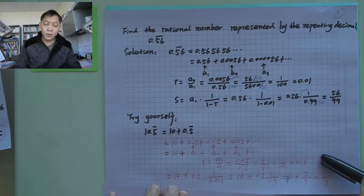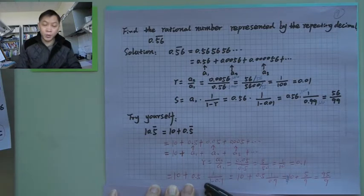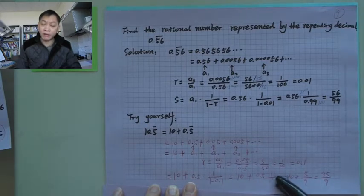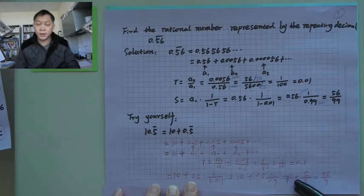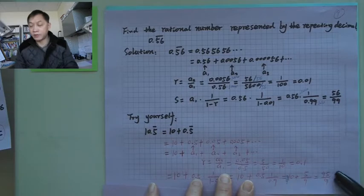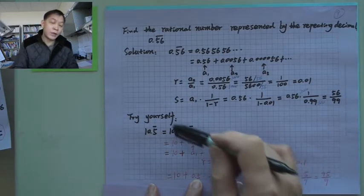So you put into the formula: 10 plus 0.5 times 1 over 1 minus 0.1, and then 10 plus 0.5 times 1 over 0.9. Add 10, so it's 95 over 9. Try yourself. I suggest you don't look at this part.